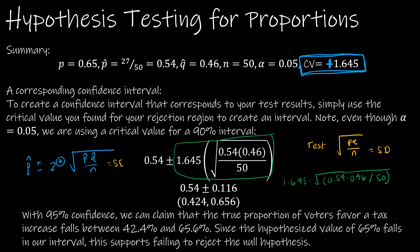What we find is our interval is 0.424 and 0.656. It's very important that you understand what that means. We can claim that the true proportion of voters favor tax increase falls between 42.4% and 65.6%. The hypothesized value of 65% does fall in that interval, and that supports failing to reject the null.